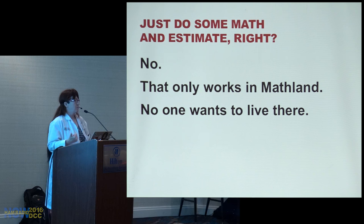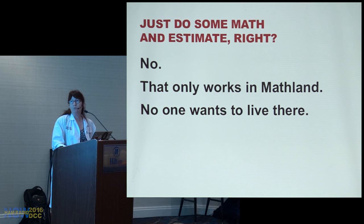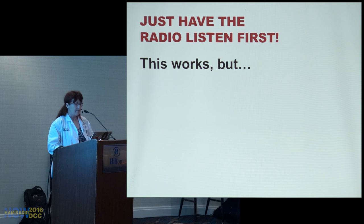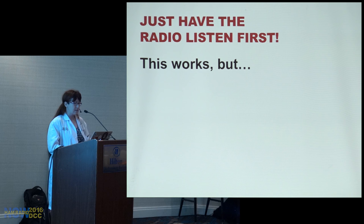Why not do the math and estimate it? We have lists of what everybody has out there — I know where all the radios are. Well, it only works in math land, and no one wants to live there. Our radios are now smarter. They're cognitive. Let's just have the radio listen first — just like a human would, the way we're supposed to behave on the bands: listen first, and if you don't hear anything, go ahead and transmit. If you put the smarts in the radio, what could possibly go wrong? Well, it already has.